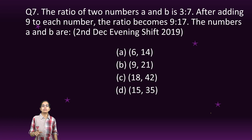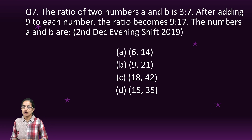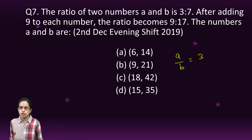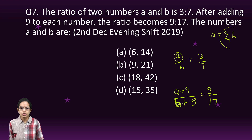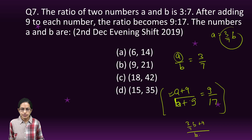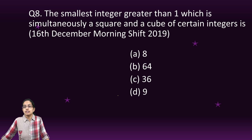Ratio and proportion questions have increased in recent examinations. Given a/b = 3/7, and after adding 9 to each, (a + 9)/(b + 9) = 9/17. Express a = (3/7)b and substitute: (3/7 b + 9) / (b + 9) = 9/17. Solve for b, then find a using the ratio. That gives you both numbers.